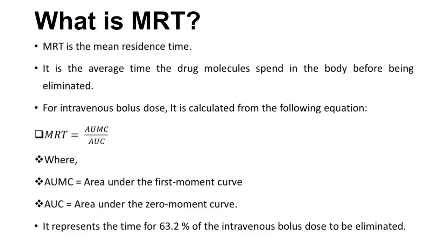For intravenous bolus dose, it is calculated from the following equation: MRT is equal to AUMC divided by AUC. Where AUMC is the area under the first moment curve, and AUC is the area under the zero-moment curve.